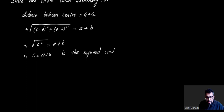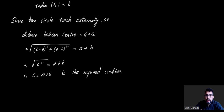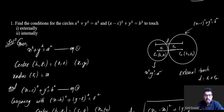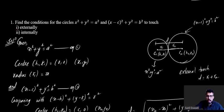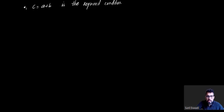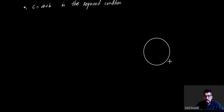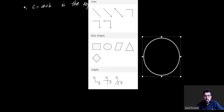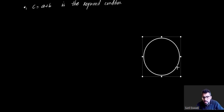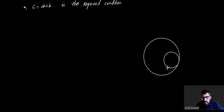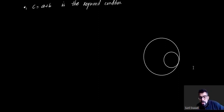Now for the condition when the two circles touch internally. When two circles touch internally, one circle lies inside the other and they meet at exactly one point.